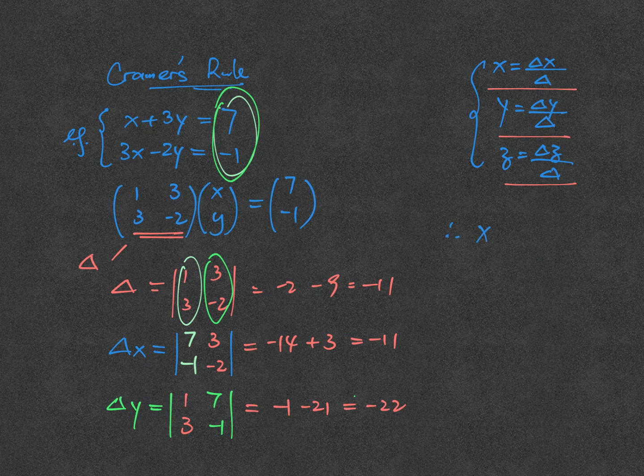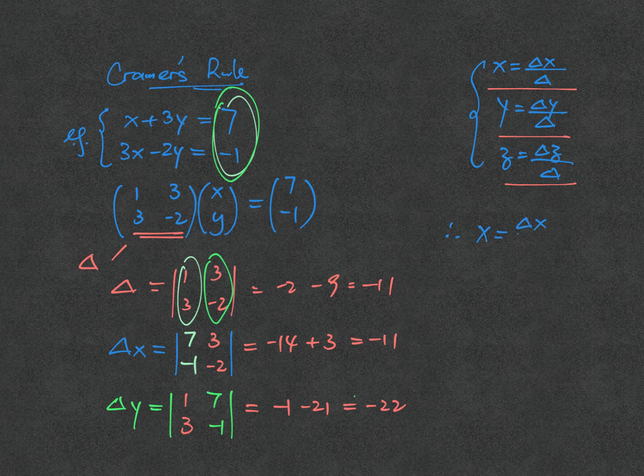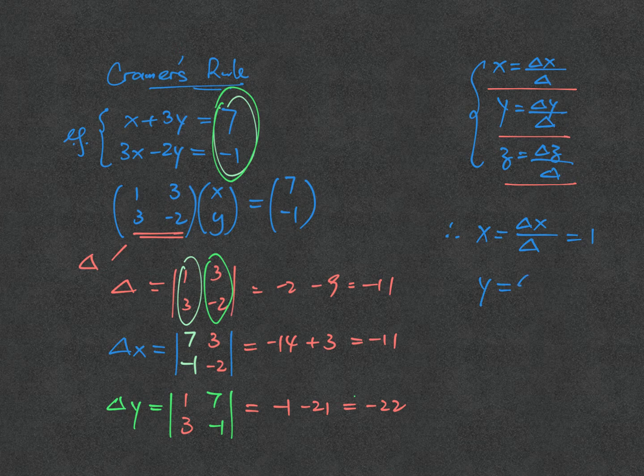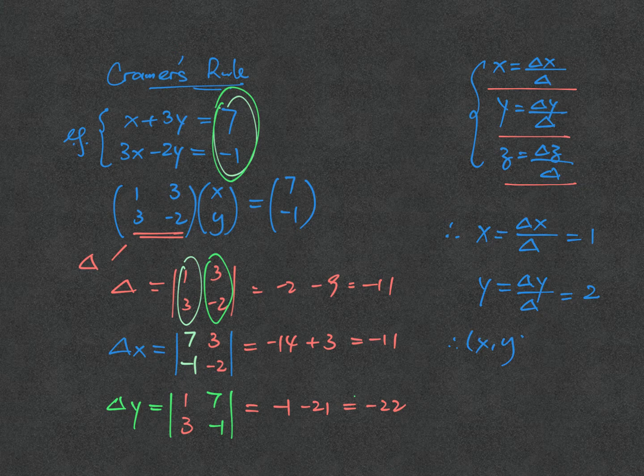As a result, x will be delta x over delta, which is 1, while y will be delta y over delta, which is 2. Here comes the answer.